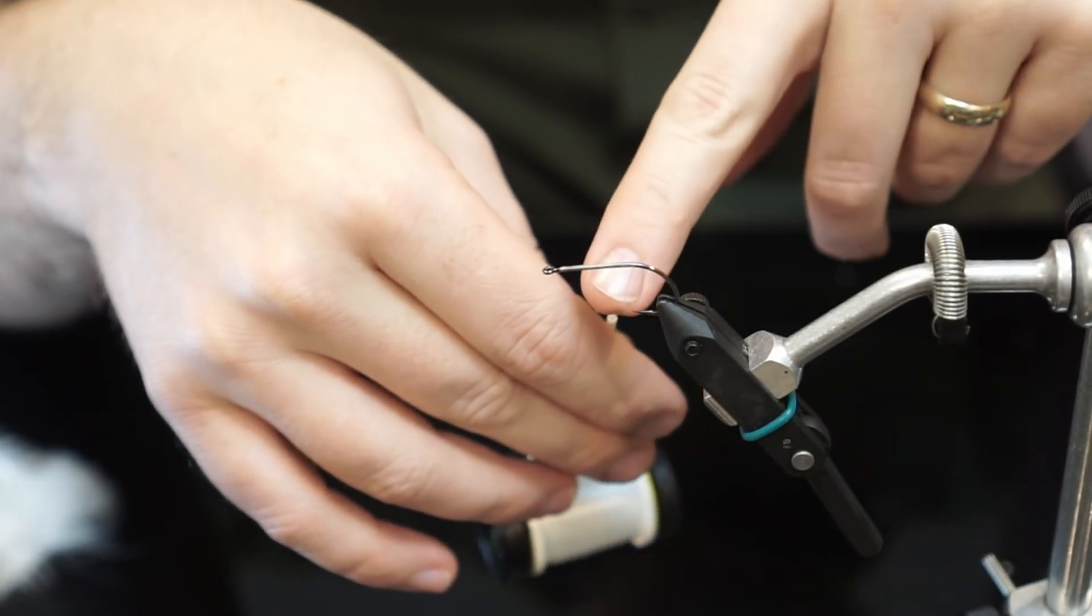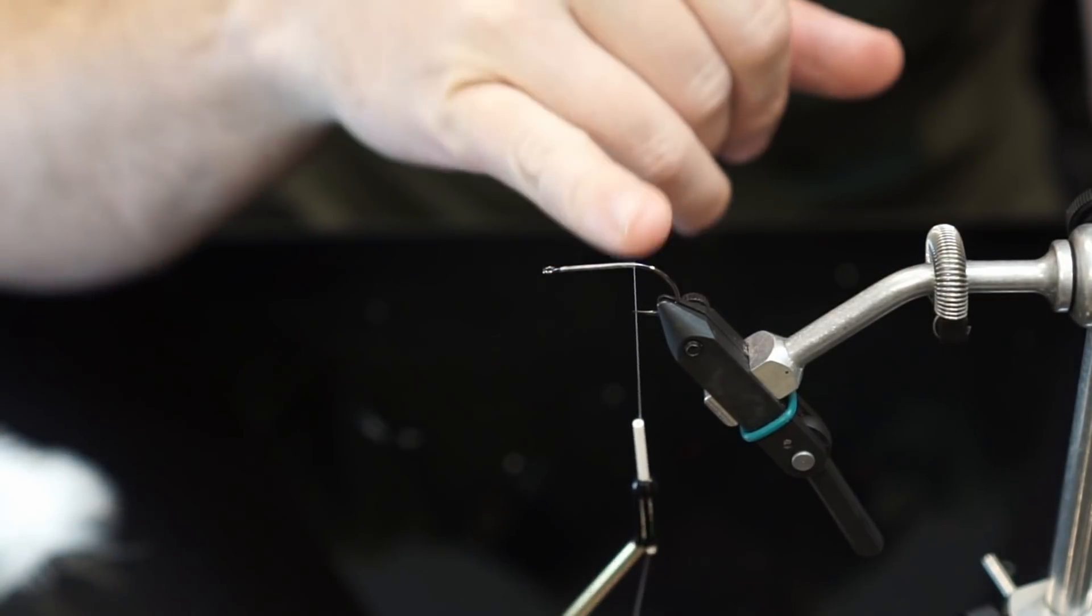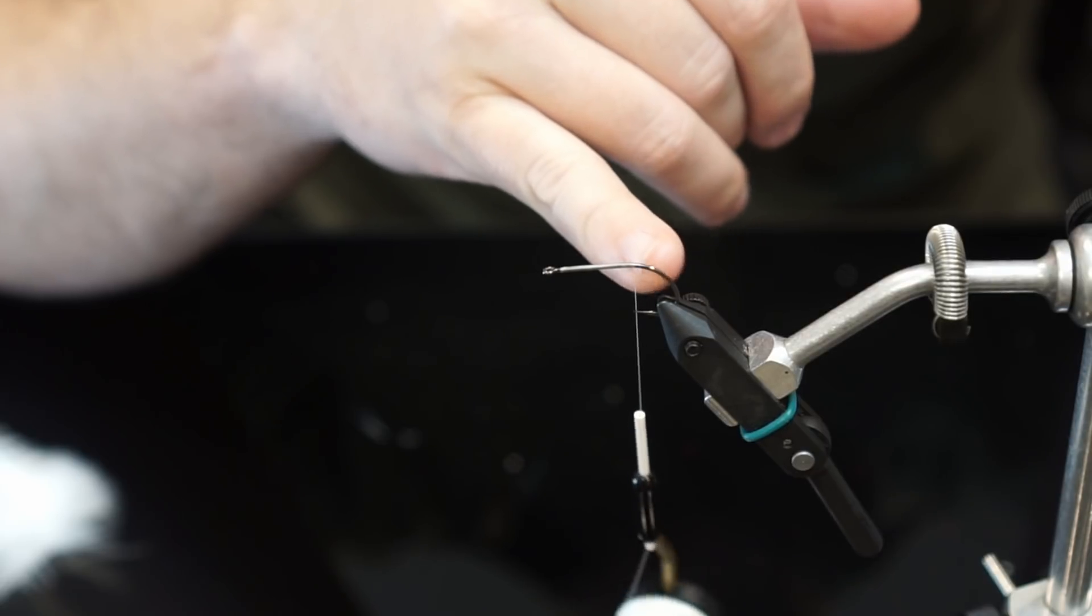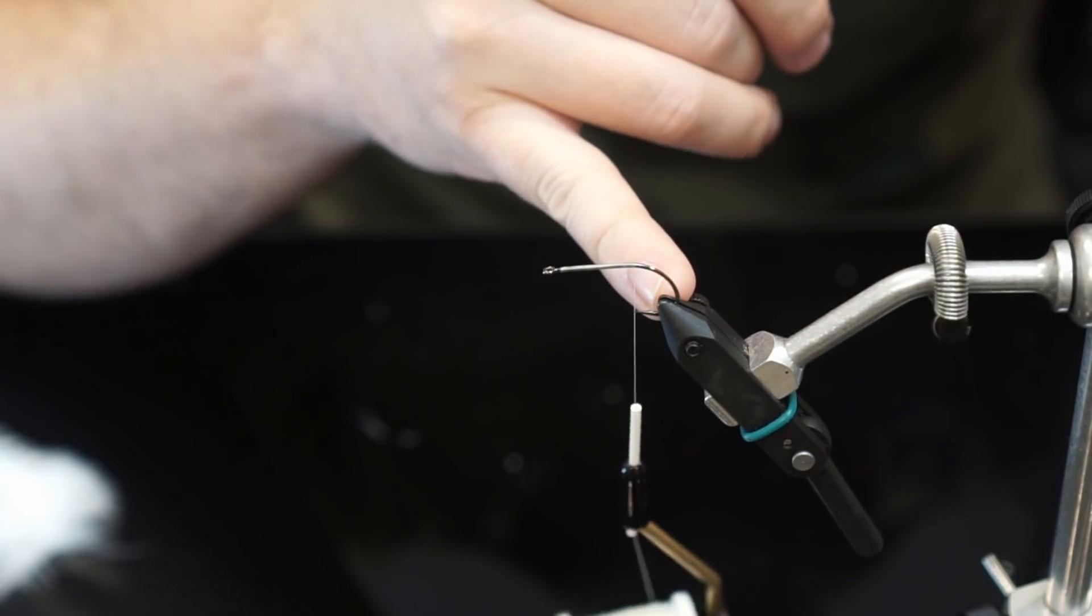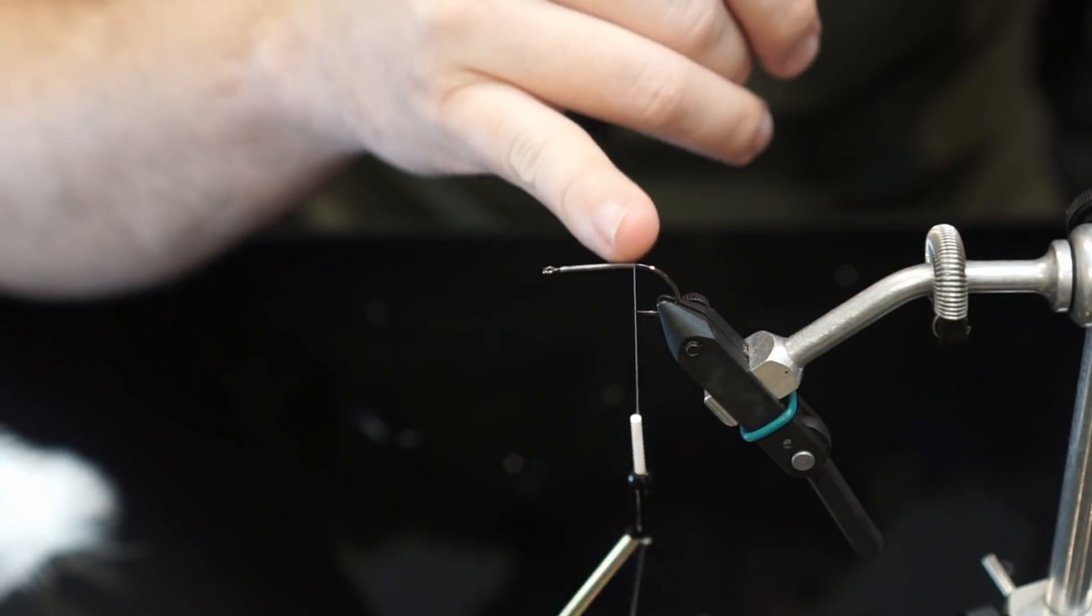Alright, so we've laid our thread base down to about where we normally do on these B10S hooks. Again, they have a slightly different profile so we don't go all the way back to where the barb is that we crushed down, we kind of go almost to the hook point itself.